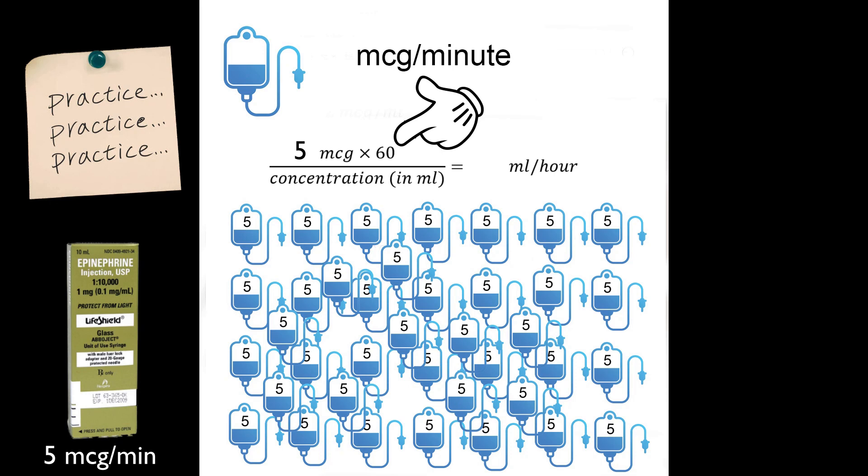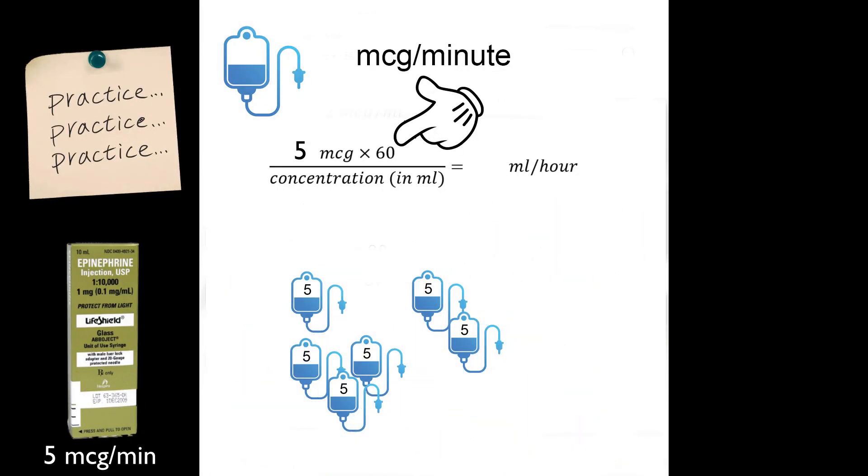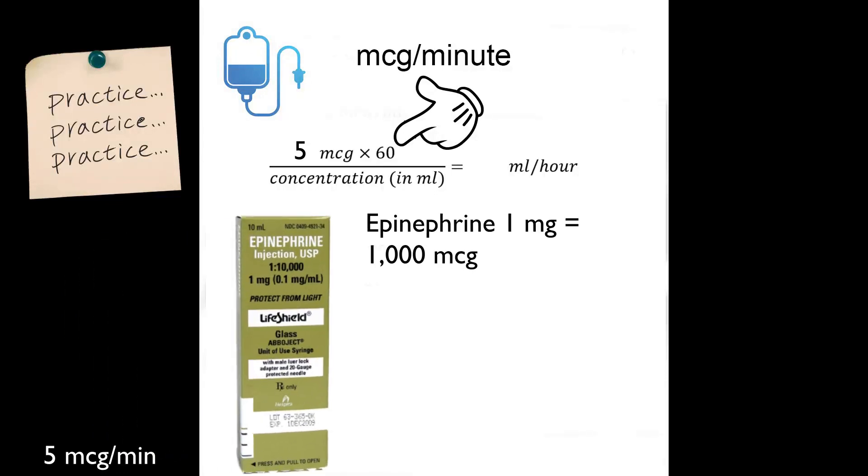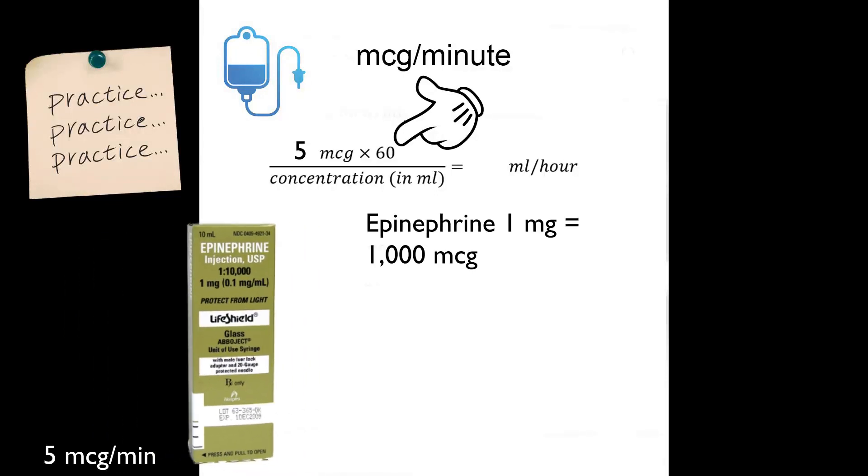And the only other math we have left is to calculate the concentration. And that's simple math. If we take the total amount of drug in the total amount of fluid measured in milliliters, we'll wind up with the concentration. So if we put 1 milligram, which is the same as 1000 micrograms, into a 500 milliliter bag...